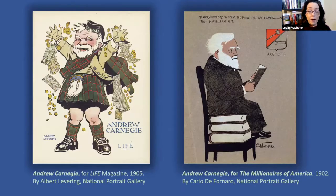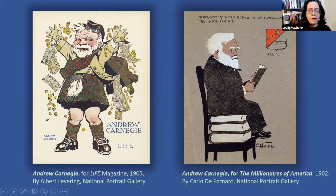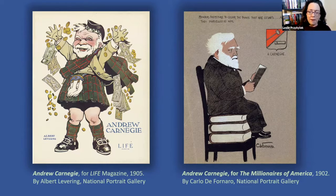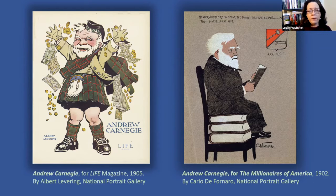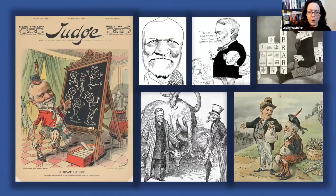In our exhibition, a number of the caricatures look at political and social commentary. The person most well-represented — the only one with two caricatures — is Andrew Carnegie. Caricature is a great reminder that portraits and likenesses can be time-specific. Both images are from the early 1900s, after Carnegie had switched from industrial magnate to philanthropist. Caricature over time gives us a sense of what traits multiple artists zoom in on, what themes have dominated the way someone is portrayed in the media.